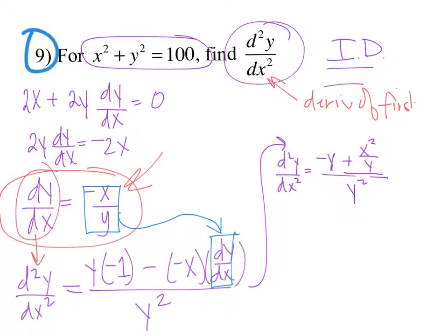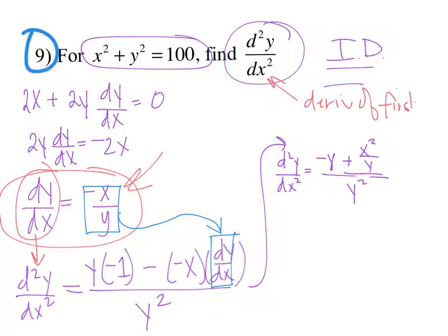That's an option for an answer. Of course, you can simplify by adding fractions with a common denominator, and then dividing — taking this fraction and dividing by y squared, multiplying by the reciprocal. Or you can leave it here. It really just depends on whether this is multiple choice and how the answer is given. The algebra would be adding those fractions and then doing keep it, switch, flip for the division.